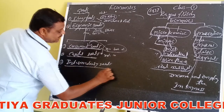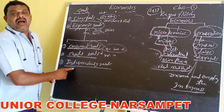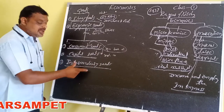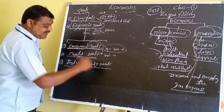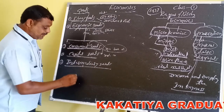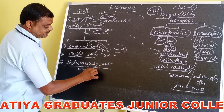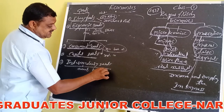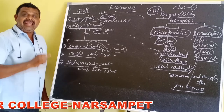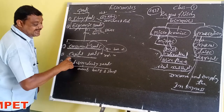Finally, intermediary goods are goods which are under the process of production — they are semi-finished goods. For example, cement, bricks, steel, and in cooking, wheat and flour are intermediary goods.